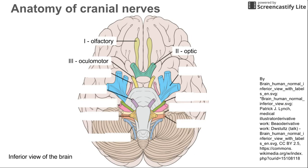Three is the oculomotor nerve, shown there in yellow. Next is the trochlear nerve, which also controls some eye movements — that's just below the oculomotor nerve.